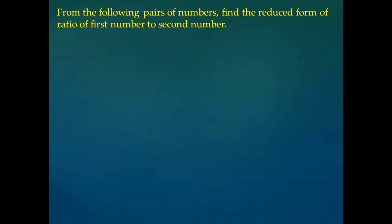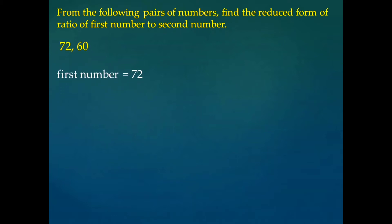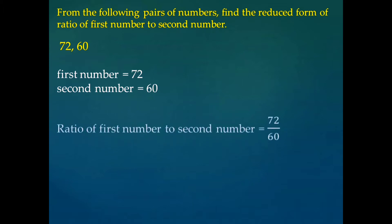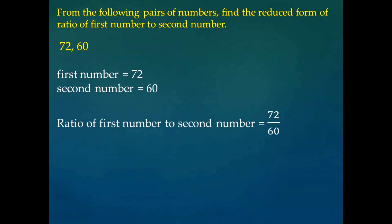Consider the first problem. The question is: from the following pairs of numbers, find the reduced form of ratio of first number to the second. The first pair is 72 and 60. We are asked to find the reduced ratio of the first number to the second.